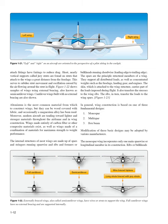Aluminum is the most common material from which to construct wings, but they can be wood covered with fabric, and occasionally a magnesium alloy has been used. Modern aircraft are tending toward lighter and stronger materials throughout the airframe, including wings made entirely of carbon fiber or other composite materials, as well as wings made of a combination of materials for maximum strength-to-weight performance. The internal structures of most wings are made up of spars and stringers running span-wise, and ribs and formers or bulkheads running chord-wise from leading edge to trailing edge. The spars are the principal structural members of a wing, supporting all distributed loads as well as concentrated weights such as the fuselage, landing gear, and engines. The skin transfers stresses to the wing ribs, which in turn transfer the loads to the wing spars. Wing construction is based on one of three fundamental designs: monospar, multispar, or box beam.